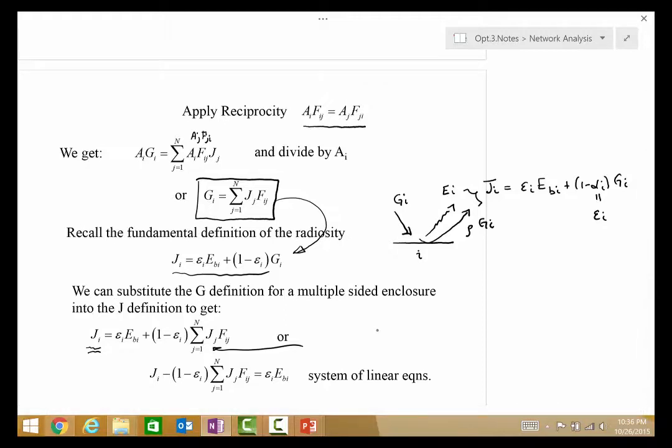So, if you had this as a three-sided enclosure, as an example, it would say that you have J1 in terms of J2 and J3. So, let's just look at that. For a three-sided enclosure, this might be the simple way to visualize that. It says that J1 minus 1 minus Epsilon 1 times this sum, and this sum is J2, F12 plus J3, F13, is equal to, on this side, Epsilon 1, Eb1.